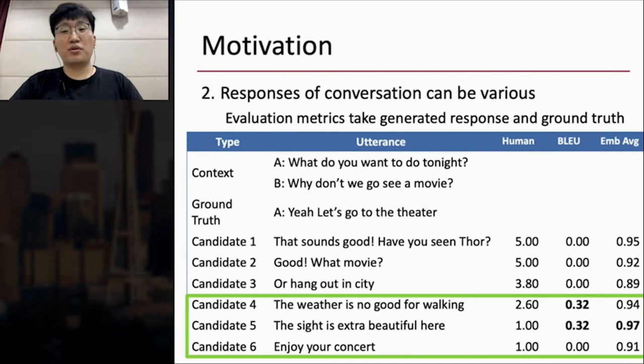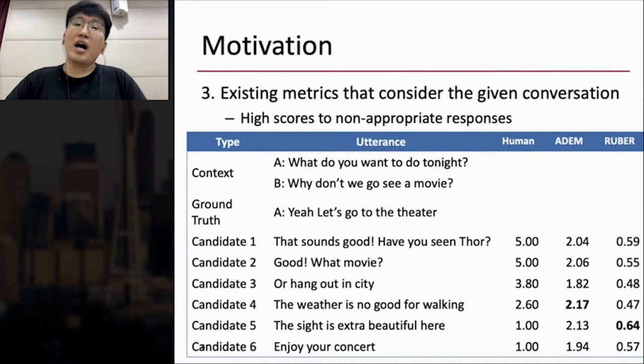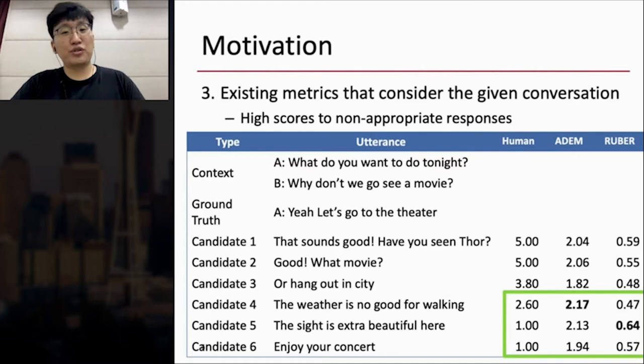Third motivation is that there are existing metrics that consider the given conversations such as ADEM and RUBER, but they might give high scores to non-appropriate responses. Testing them on the same set of candidates we used before showed that they don't have a positive correlation with ground truth. Furthermore, it needs human-level scores to train the model.